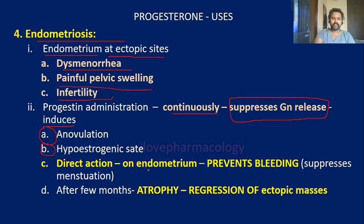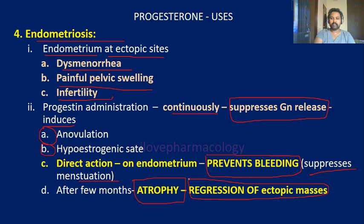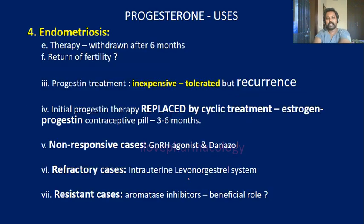The direct effect of progesterone on endometrium is it prevents bleeding by suppressing menstruation through suppression of gonadotropin release. After a few months there will be atrophy and regression of the ectopic masses. The therapy with progesterone can be withdrawn after six months based on symptomatic benefits.